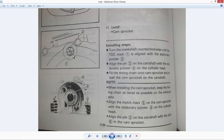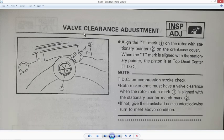...that's the old school rotor mark. It doesn't match the new engine. If we go to valve clearance adjustment, it says align the T mark number one on the rotor with the stationary pointer number two on the crankcase cover. When the T mark is aligned with the stationary pointer, the piston is at top dead center. And again, you can see this looks nothing like the 2001 motor timing marks.